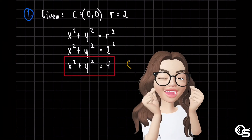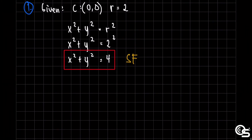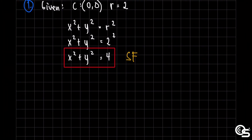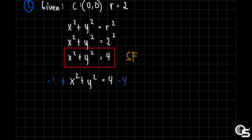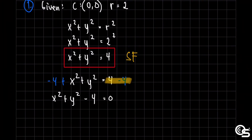Next, let us find the general form. To do that, we will rewrite the standard form and add negative 4 to both sides of the equation, using the addition property of equality. So we will now have x squared plus y squared minus 4 is equal to 0, because 4 minus 4 is 0. And that is already our general form.